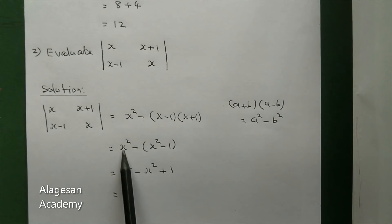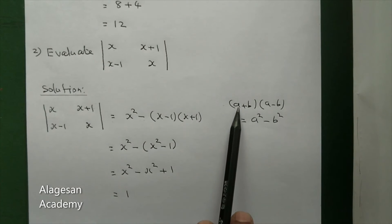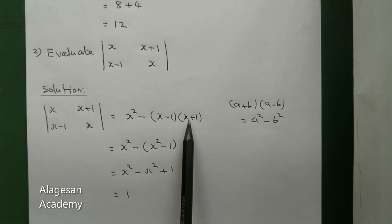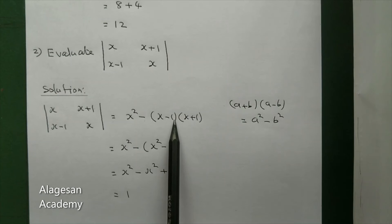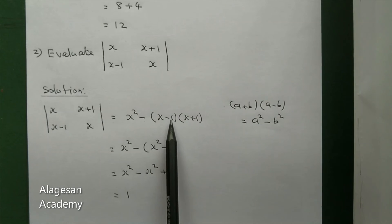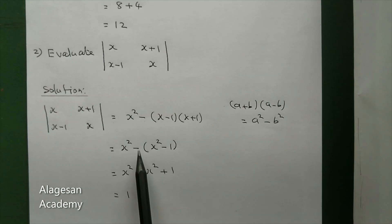x² we get here. Minus, we know the formula a+b into a-b equals a² minus b². So x+1 into x-1, here x² minus 1² is x² minus 1. So x² minus x² minus into minus is plus 1.